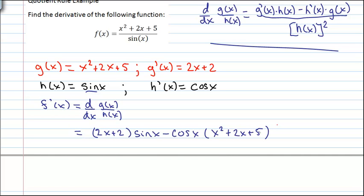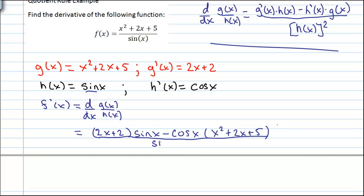And then this is all over h of x squared, which would just be sine squared x. And really, there's not a whole lot of factoring we can do there to simplify this. So we'll just keep it in this form.